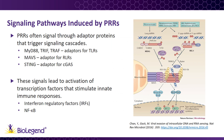Binding of PRRs by viral PAMPs triggers signaling pathways that lead to activation of genes involved in the innate immune response. PRRs often initiate the signal through the activation of an adapter protein. Almost all TLRs can activate signaling through the shared adapter MyD88, and some TLRs can activate signaling through the adapter TRIF. Both adapters can recruit TRAF proteins that eventually cause activation of transcription factors like NF-κB, a regulator of innate immune genes.